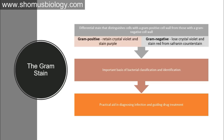The terms 'gram positive' and 'gram negative' have nothing to do with units of mass — they refer to the name of the researcher who developed the staining method used to distinguish the two types. It is a differential stain: gram positive cells retain crystal violet and stain purple, while gram negative cells lose the crystal violet — due to their thin peptidoglycan layer — and are stained red by safranine.